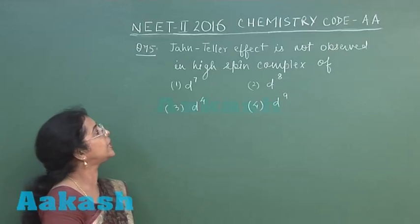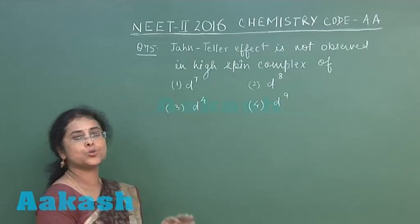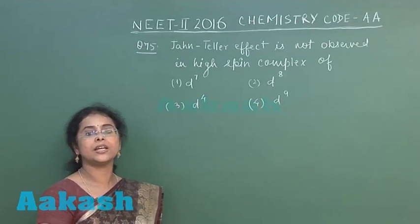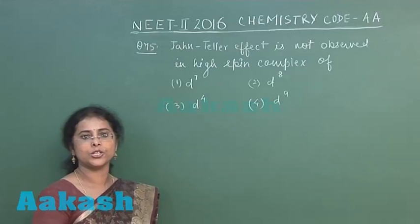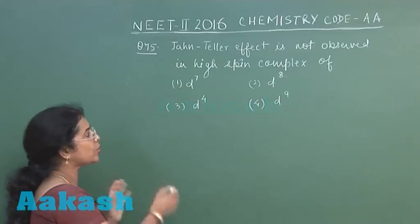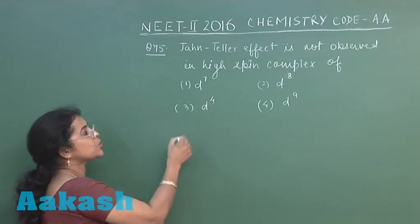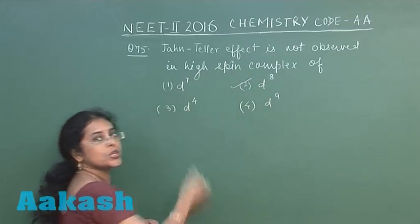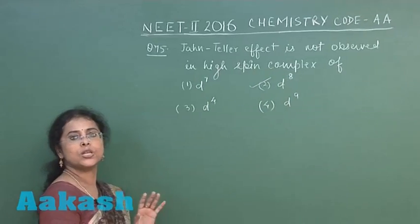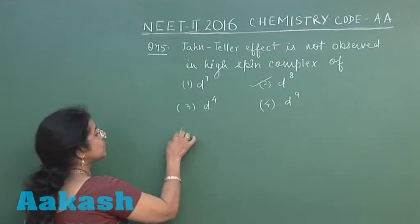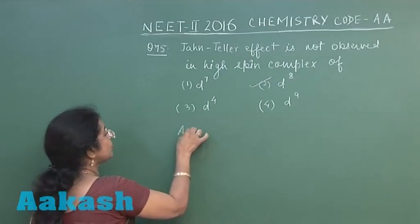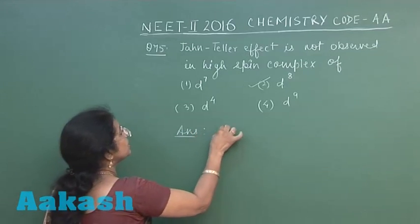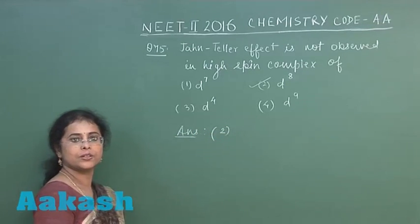Jahn-Teller effect is related to distortion of geometry, which is most often observed in high spin octahedral complexes of D8 configuration. So according to the question given, the second option is the most appropriate answer.